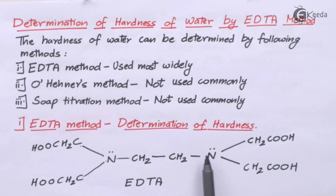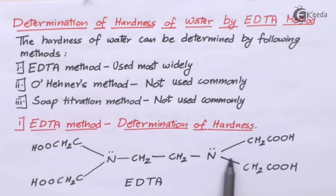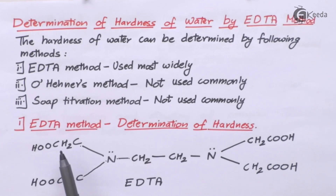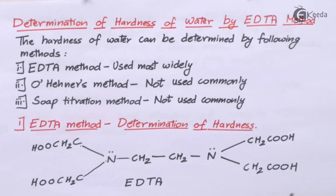Similarly, the other nitrogen also has three bonds — one, two, three, four, five, six electrons — three bonds with six electrons and the seventh and eighth form the lone pair. It is connected with CH2 and COOH on all four sides. This is the exact chemical formula for EDTA.